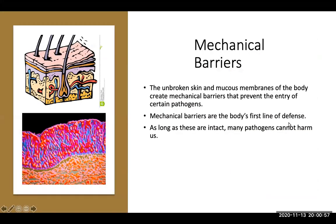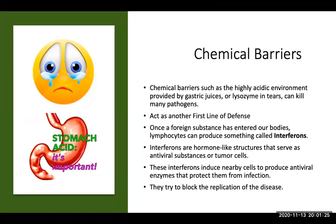Unbroken skin and mucous membranes of the body create mechanical barriers that prevent the entry of certain pathogens. These mechanical barriers are the body's first line of defense — as long as these are intact, many pathogens cannot actually harm us. A lot of times if we get some sort of infection or bacteria, it's usually because it entered through a cut or some destruction of one of these mechanical barriers.